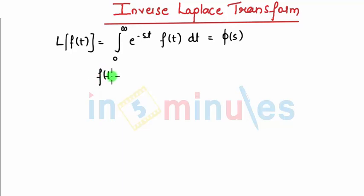So we know when a function f(t) is transformed to φ(s), that means we do Laplace transform. Now when you come from φ(s) to f(t), you do ILT, that is inverse Laplace transform.